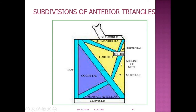The triangles are: the muscular triangle, the carotid triangle, the digastric triangle — also referred to as the submandibular triangle, though the correct nomenclature is digastric triangle — and the half submental triangle. These three muscles are all attached to the hyoid bone. This is the diagrammatic representation of the divisions of the anterior triangles.